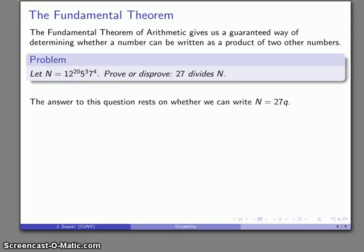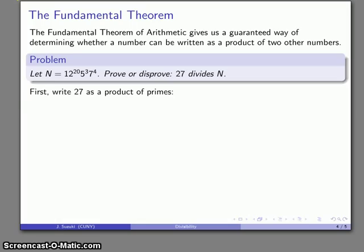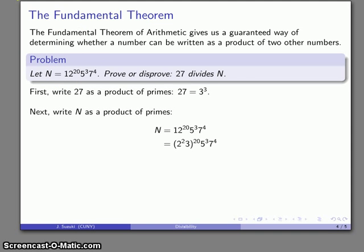The important thing is that the Fundamental Theorem of Arithmetic only applies if we have the prime factorization. We want to write 27 as a product of primes: that's 3 to the third power. We also want to write N as a product of primes. Now, 5 and 7 are both prime numbers, so we're good there. 12, on the other hand, is not, so we need to break that up: 12 is 2 squared times 3.